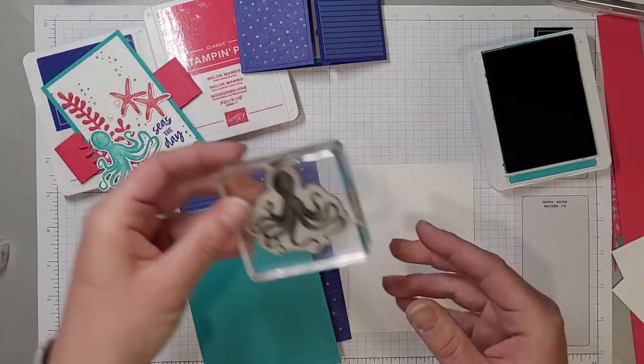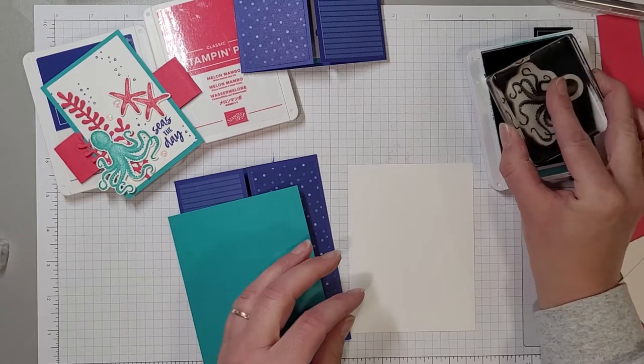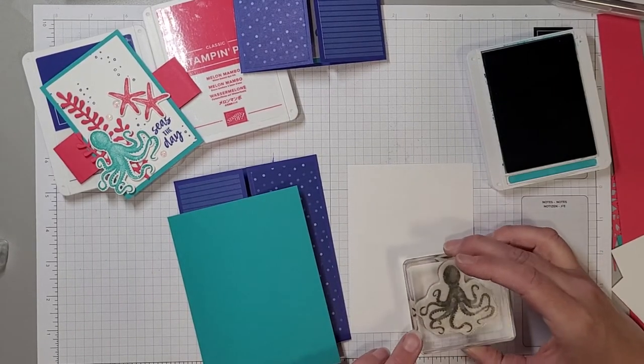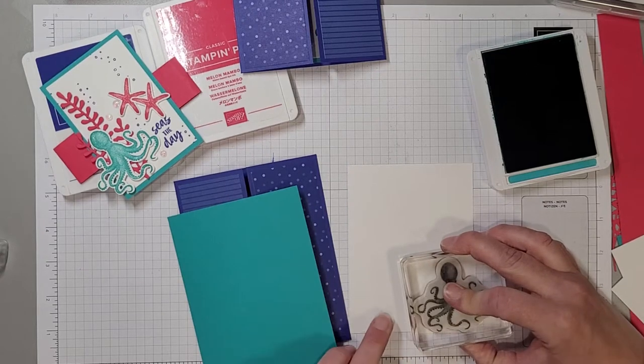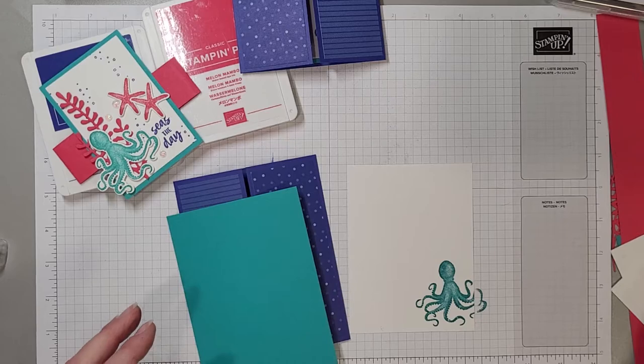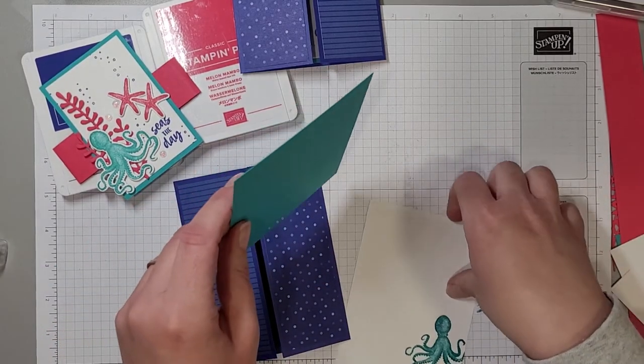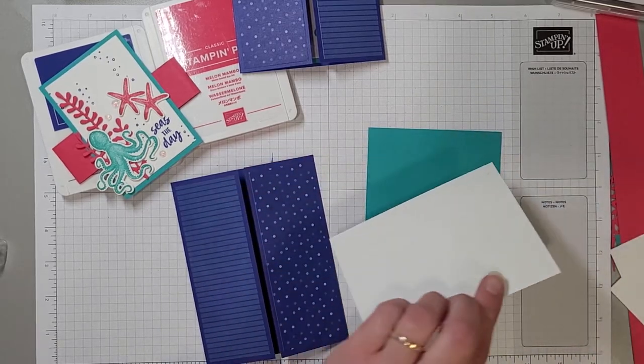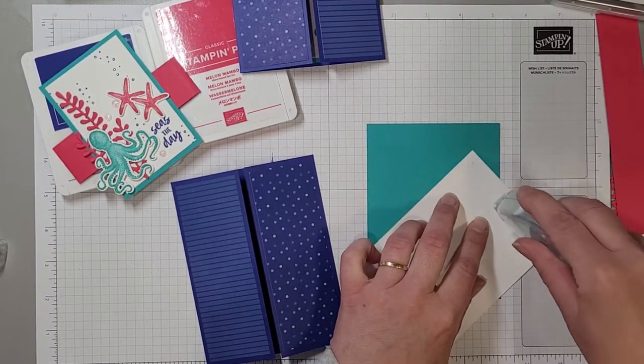Before I attach those together I am going to pull out my Bermuda Bay ink pad and the octopus stamp. I love this image and I'm just going to stamp him in the corner down here kind of off the side of the paper.